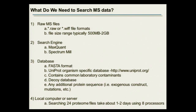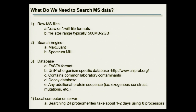When we say we search the data, what do we actually need? After acquiring data, we get raw files — typically in .raw format for Thermo mass spectrometers. These formats are specific to the instrument type, so when choosing an algorithm, you must ensure it's compatible with your raw data. File sizes now range from 500 megabytes up to two gigabytes, which has dramatically increased over the years because mass spectrometers can now acquire high-resolution data at both the MS and MS/MS level.